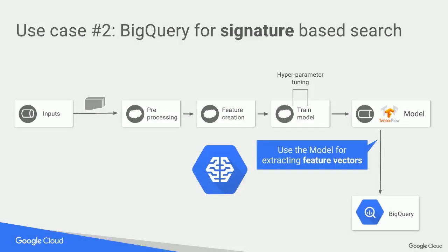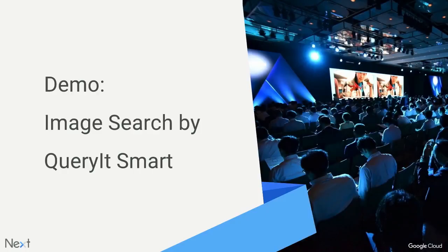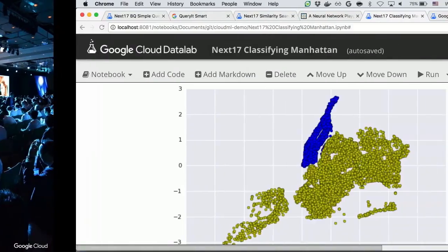Use case number two is to use BigQuery for signature-based search, based on the result you got from the data model you trained with the machine learning engine. We use the ML engine for extracting the feature vectors. I'd like to show another demonstration of BigQuery Smart.